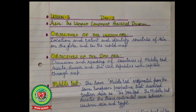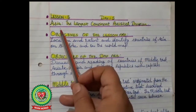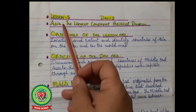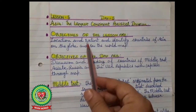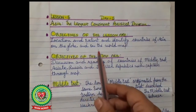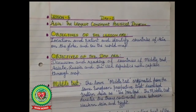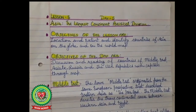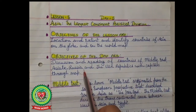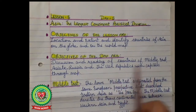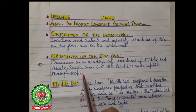Hello students, welcome to the geography class. This is my fifth lecture: Asia the largest continent, political division, lesson number five of your geography book. The objectives of the lesson are location and extent, and to identify countries of Asia on the globe and on the world map. So far we have discussed the political division of Asia: East Asia, Southeast Asia, South Asia, and West Asia. The objectives of today are discussion and reading of countries of Middle East, Asiatic Russia, and the USSR republics with capitals through map.